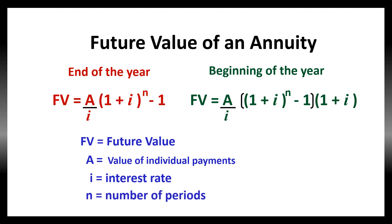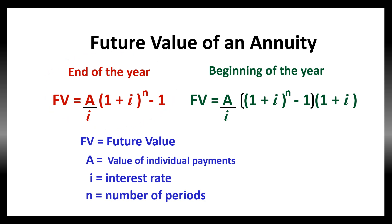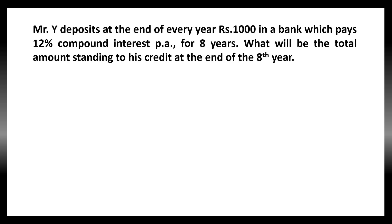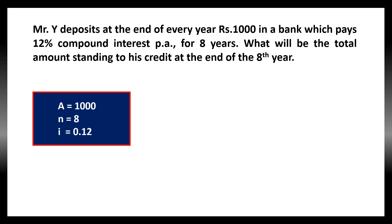In normal cases, the situation will be that cash flows are coming at the end of the year. So, if nothing is mentioned in the question, that means the cash flows are received at the end of the year. Now, let us take an example. Mr. Y deposits at the end of every year rupees 1000 in a bank, and every year that person is depositing 1000. So, A is 1000.